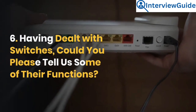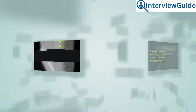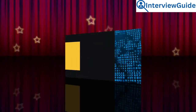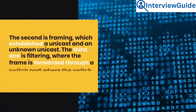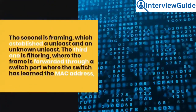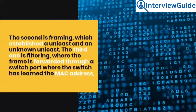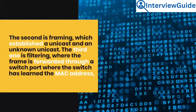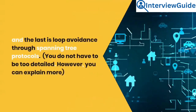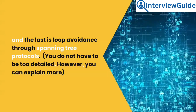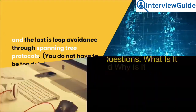Question 6: Having dealt with switches, could you please tell us some of their functions? There are four main functions of a switch. The first is learning the MAC or physical address of a given device on a switch port. The second is framing, which establishes a unicast and an unknown unicast. The third is filtering, where the frame is forwarded through a switch port where the switch has learned the MAC address. The last is loop avoidance through spanning tree protocols.